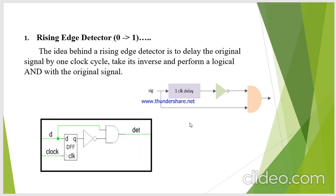If you look at the diagram, I have my input signal and a one-clock-cycle delay circuit. The output from that one clock cycle delay is given to the NOT gate, and the output from the NOT gate and the input signal are given to the inputs of the AND gate. That will detect the rising edge.